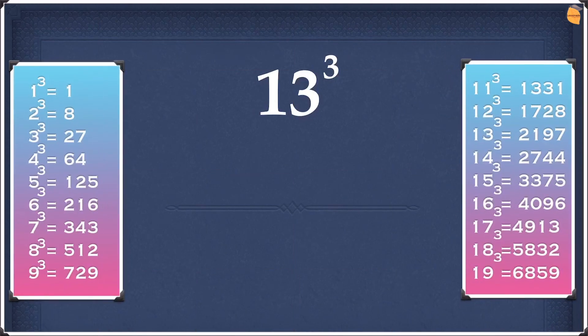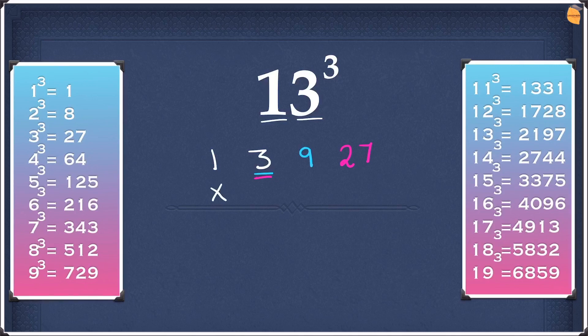Now let's look at this example which is 13 cubed. We are going to do the same thing — repeat the two numbers, so write the 1 and the 3. Then we're going to square the second digit, so it is going to be 9. Then cube the second digit, which is going to be 27. Now we're going to leave the first and the last digit and double the two digits in the middle — 3 doubled is going to be 6 and 9 doubled is going to be 18.